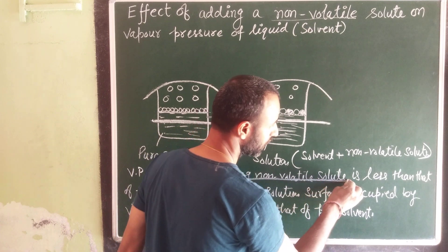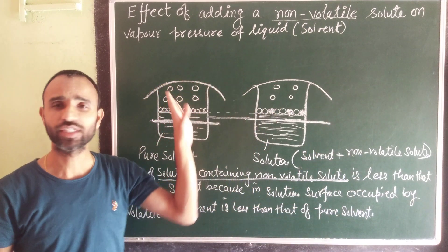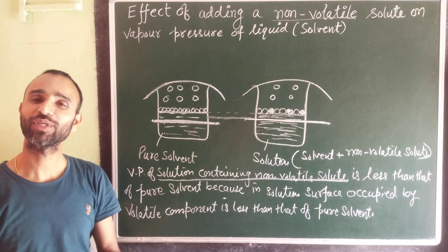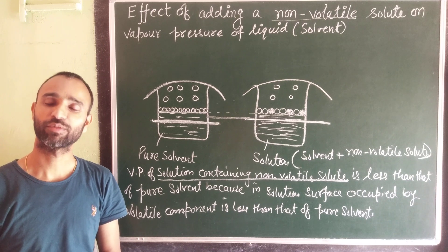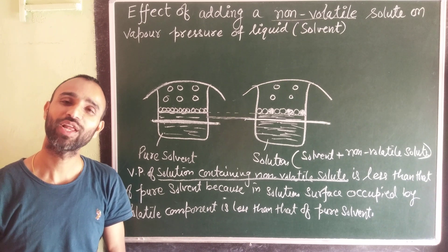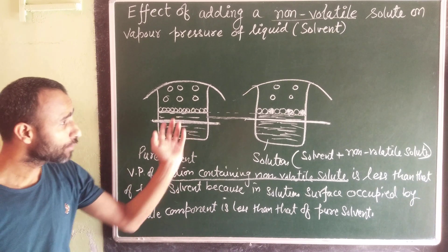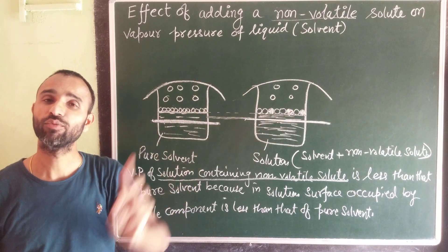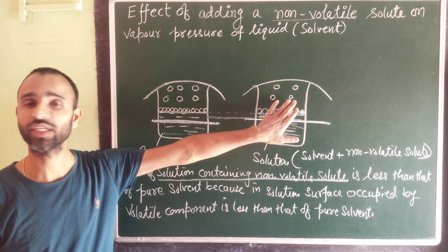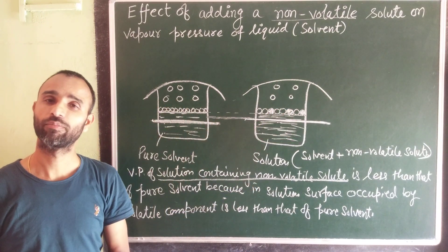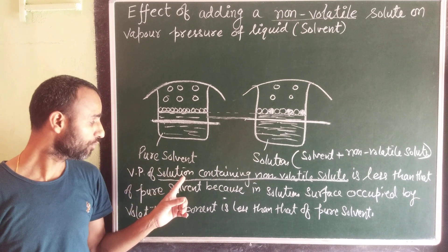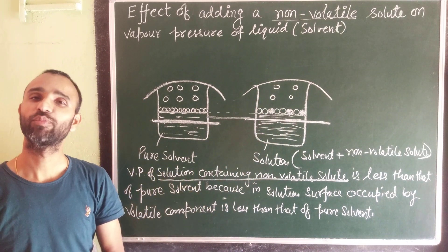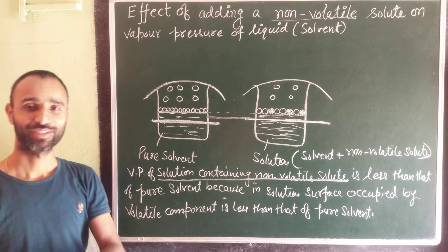So keep in mind: the vapor pressure of a solution containing a non-volatile solute is always less than that of the pure solvent. Since vapor pressure and boiling point are inversely related, the boiling point of a solution containing a non-volatile solute is more than that of the pure solvent.